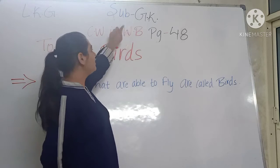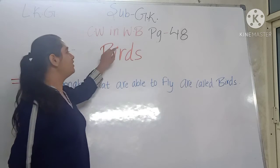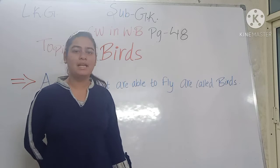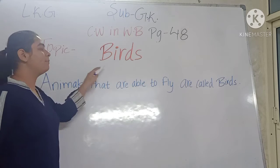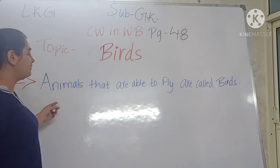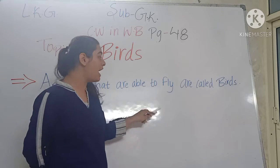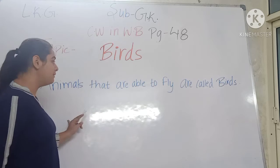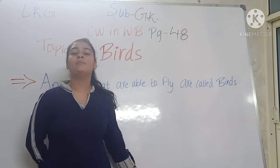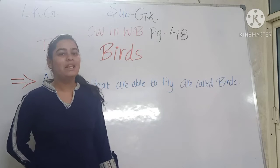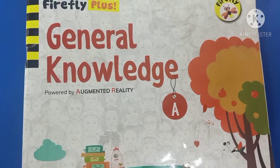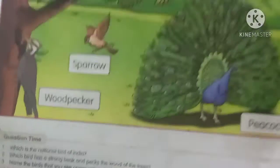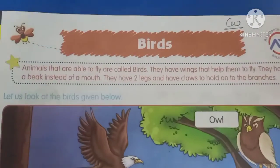Now kids, our next subject is G.K. and our class book in G.K. is workbook page number 48. Page number 48, topic: Birds. Animals that are able to fly are called birds. So today we will learn about birds. Take this book, General Knowledge, and open page number 48. This is your class book page number — Birds.